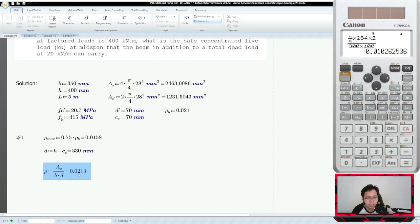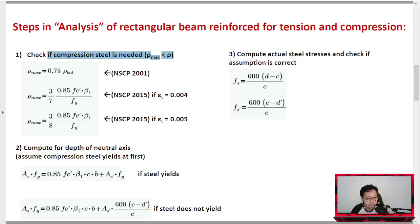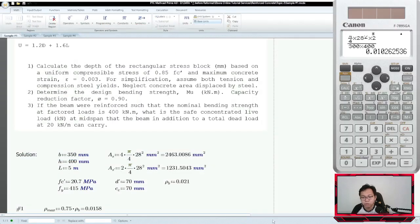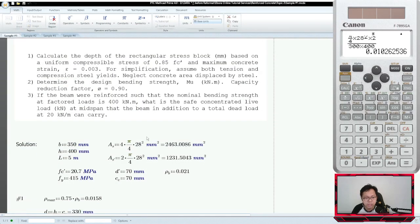Therefore our raw is actually 0.0213. Therefore, the raw is greater than raw max - not allowed. Which is why we need to analyze this one as doubly reinforced beam. Next step is to compute for the depth of neutral axis. Although the problem asks for depth of rectangular stress block A, we just need to compute C first. We can easily solve A once we have C.